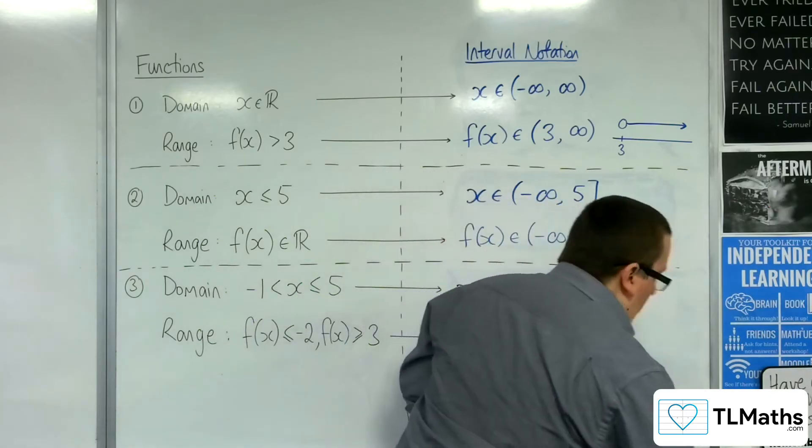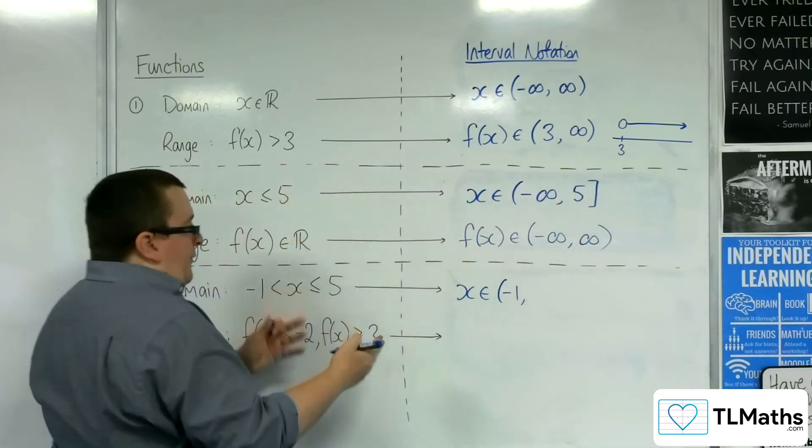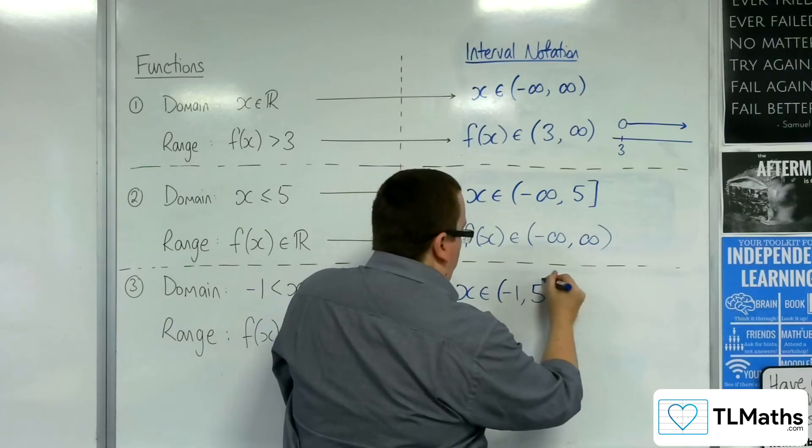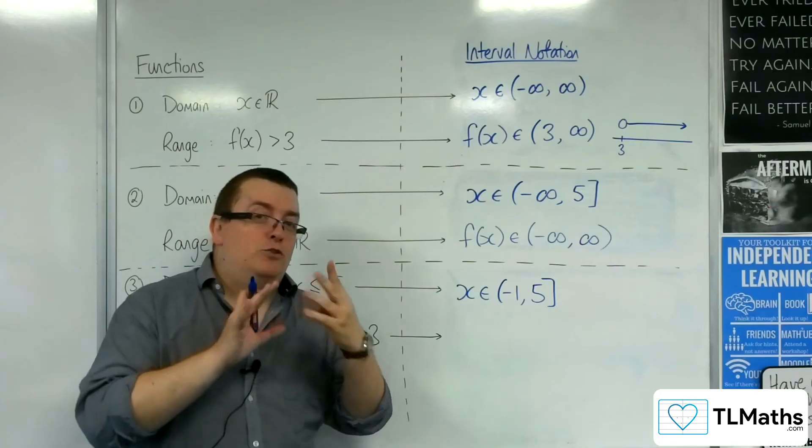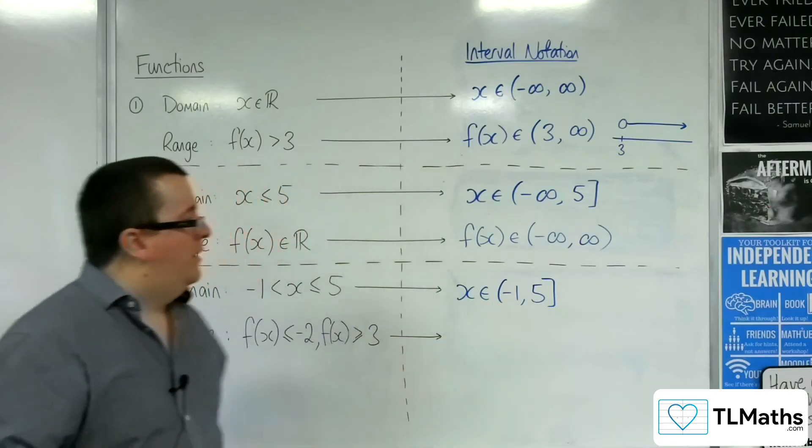So, instead, we would just have minus 1 up to 5, 5 with a square bracket, minus 1 with a curved bracket, 5 with a square bracket, and it's much more compact. And that's perfectly fine.